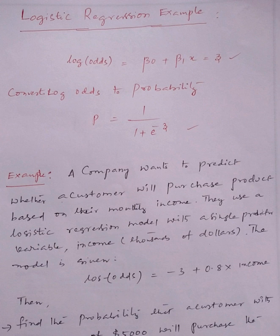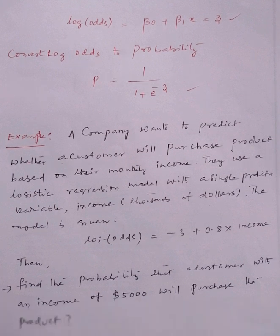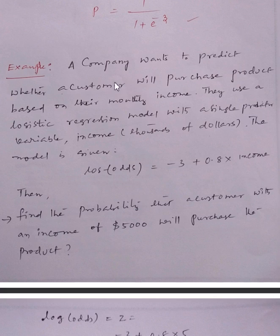Now we will discuss with an example. A company wants to predict whether a customer will purchase a product based on their monthly income. They use a logistic regression model with a single predictor variable, income in thousands of dollars. The model is given: log(odds) = -3 + 0.8 × income.